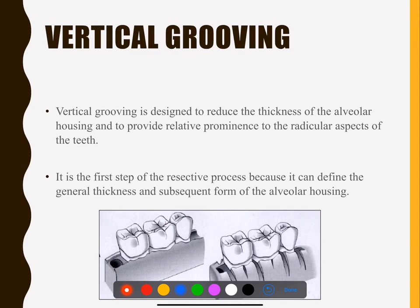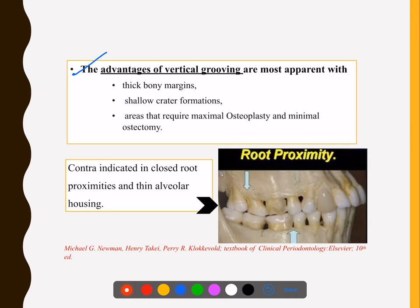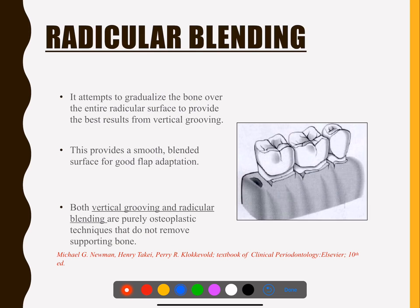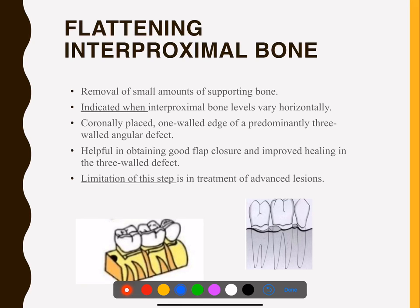Vertical grooving involves making vertical grooves in the bone below using those instruments. You need thick bone to perform vertical grooving. Then you blend the grooves together to give a smooth, beautiful texture. Vertical grooving and radicular blending are both osteoplastic procedures.